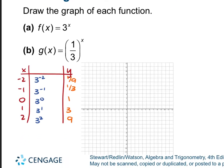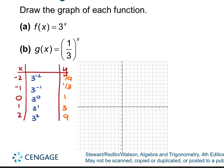So when you go to graph these, you're going to have the ordered pair negative 2, 1 ninth — really close to the x-axis. Then negative 1, 1 third — up a little bit. Then 0, 1. Then 1, 3. And 2, 9. From there, you just draw your line through those ordered pairs, making sure that you treat the x-axis, for this one at least, as an asymptote, so that line's not going to cross over the x-axis.